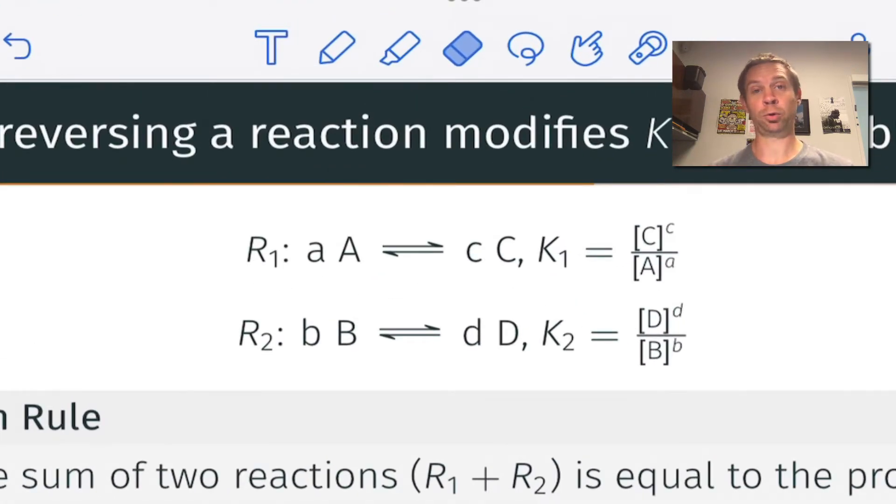R1 is little a moles of A goes to little c moles of C, and there's K1 for that with the form you see on the slide. And R2 is little b molecules of B going to little d molecules of D. And the form of its reaction quotient is shown here with K2, of course both of these being the reaction quotients at equilibrium when they're equal to the equilibrium constant.